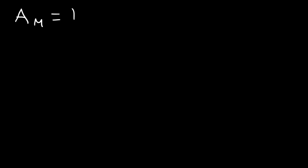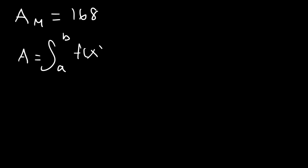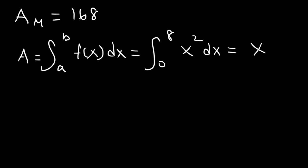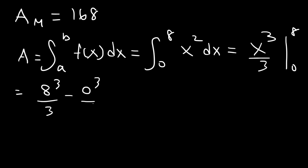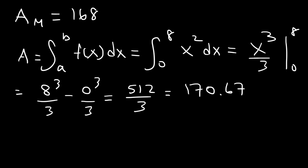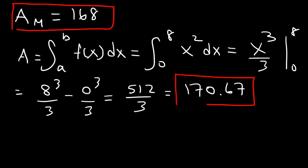Let's see how close we are to the actual answer. The exact area under the curve equals the definite integral from 0 to 8 of x squared dx. The antiderivative of x squared is x cubed over 3, evaluated from 0 to 8. That gives 8 cubed over 3 minus 0, which is 512 divided by 3, approximately 170.67. As you can see, the midpoint rule gives a very good approximation of the actual area.